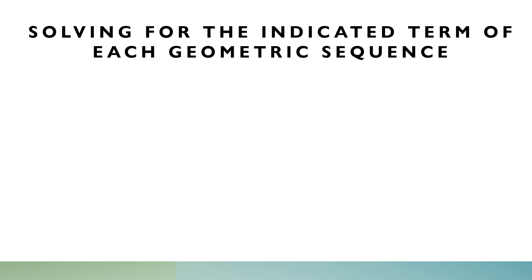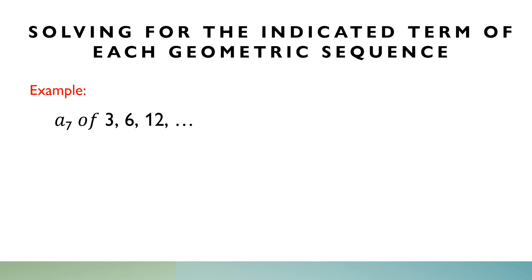So, how do we solve for the indicated term of the given geometric sequence? Say for example, I have here a sub 7 of the sequence 3, 6, 12. We are going to solve for a sub 7. From the given, our n is 7, the first term a sub 1 is equal to 3, and r is unknown.